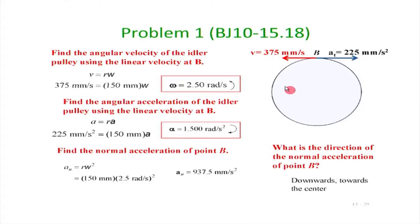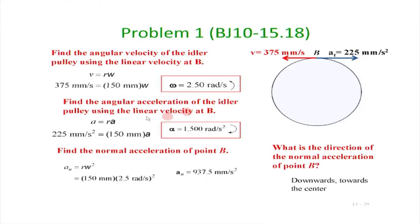The velocity has this direction, so omega should be in the anticlockwise direction, and from v = r·omega we can find omega = v/r. Similarly, to find the angular acceleration of the idler pulley: the tangential acceleration A_t equals r times alpha, where alpha is the angular acceleration. The direction should be clockwise because that ensures A_t is to the right.